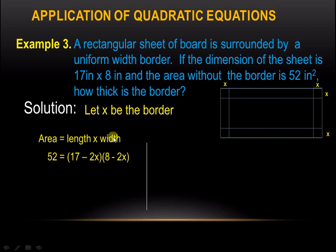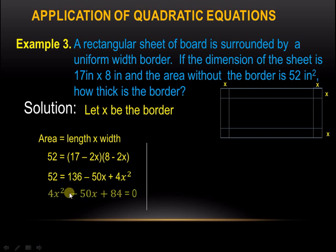Multiplying these together, we get the equation 52 equals 136 minus 50x plus 4x squared. Transferring 52 to the other side, 136 minus 52 gives us 84, so we have 4x squared minus 50x plus 84 equals 0.